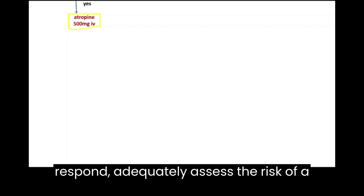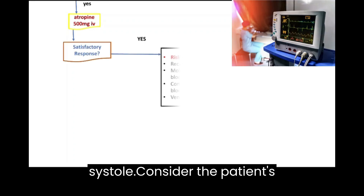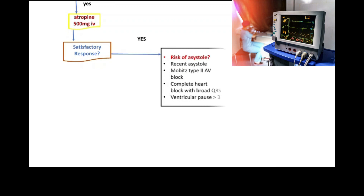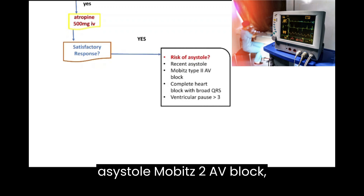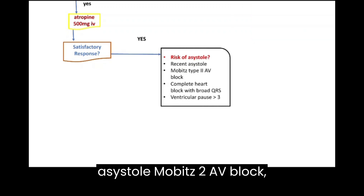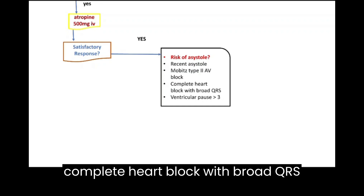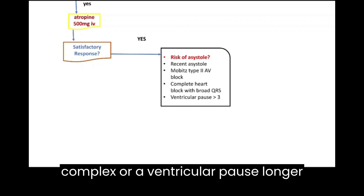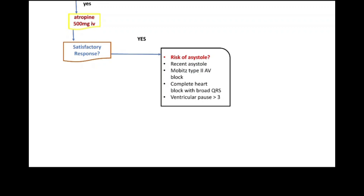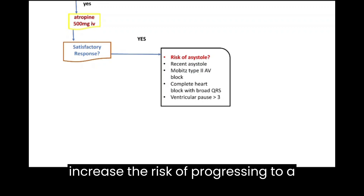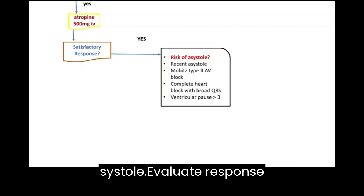If the patient responds adequately, assess the risk of asystole. Consider the patient's medical history, including recent asystole, Mobitz type 2 AV block, complete heart block with broad QRS complex, or a ventricular pause longer than 3 seconds. These factors increase the risk of progressing to asystole.